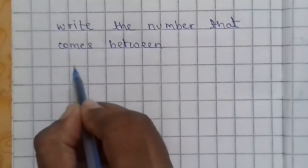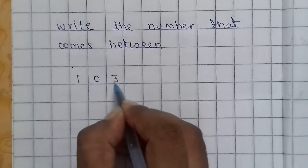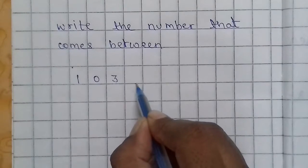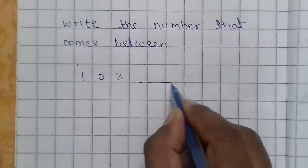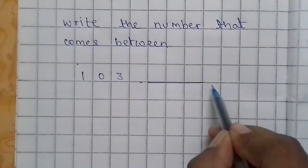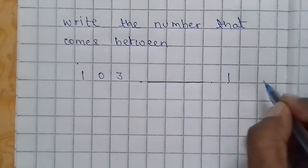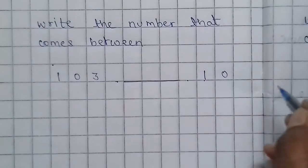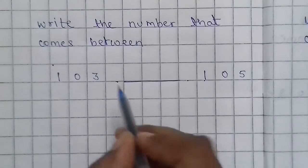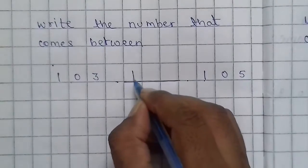Here we leave one line and then we will write the number: one hundred, three. After that we will leave one box and then we will underline three boxes. After leaving one box, we will write the next number: one hundred, five. Which number will come in between one hundred three and one hundred five? Yes, it's one hundred four.